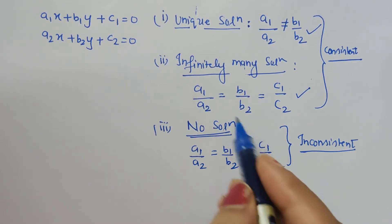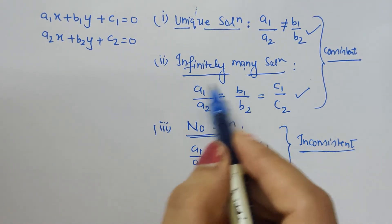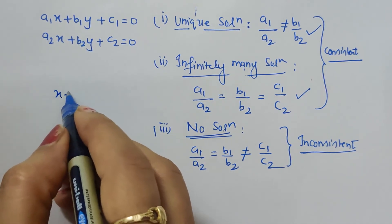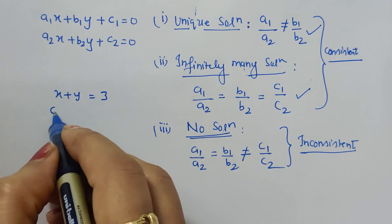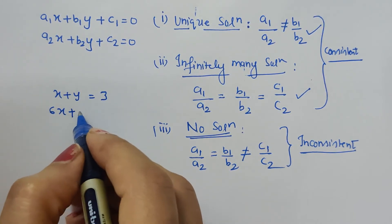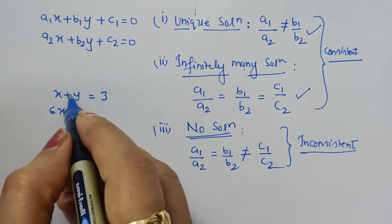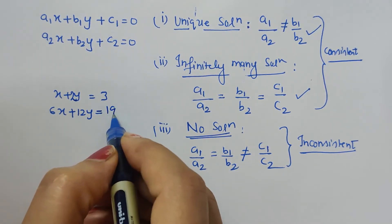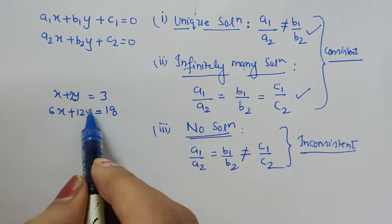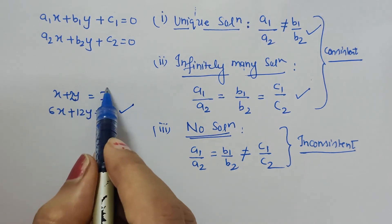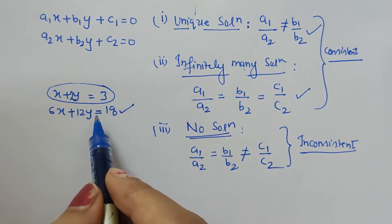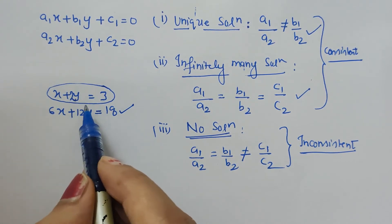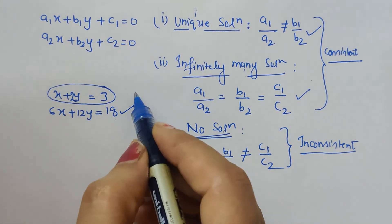Another name is given for infinitely many solutions. This case arises when there is a scalar multiple relationship between two equations. For example, if one equation is x + y = 3 and the other is 6x + 12y = 18, the second equation is 6 times the first equation — a scalar multiple relationship — because 1×6=6, 2×6=12, and 3×6=18.